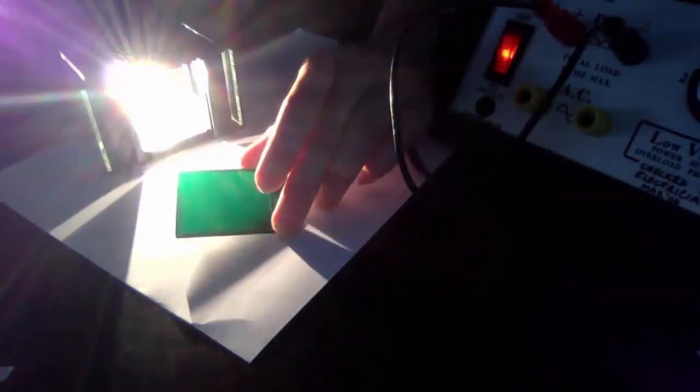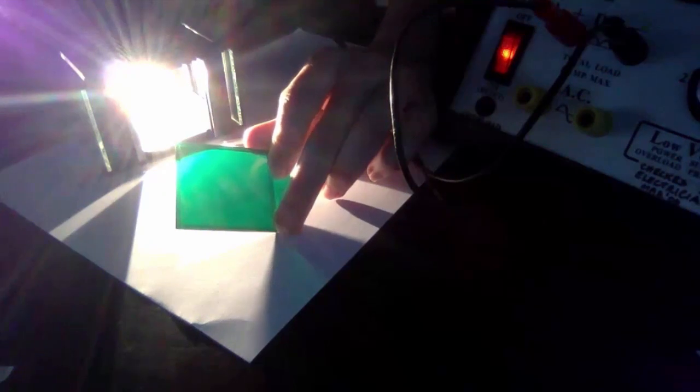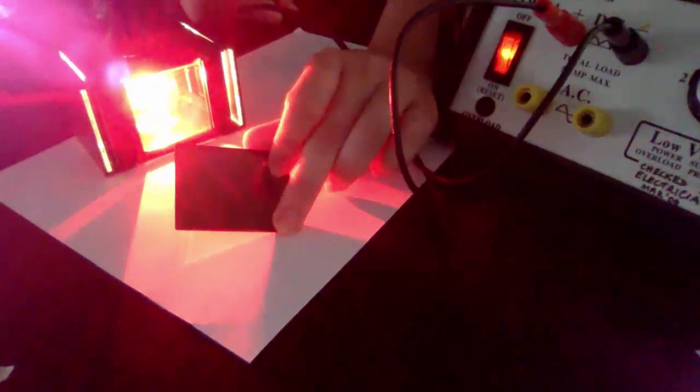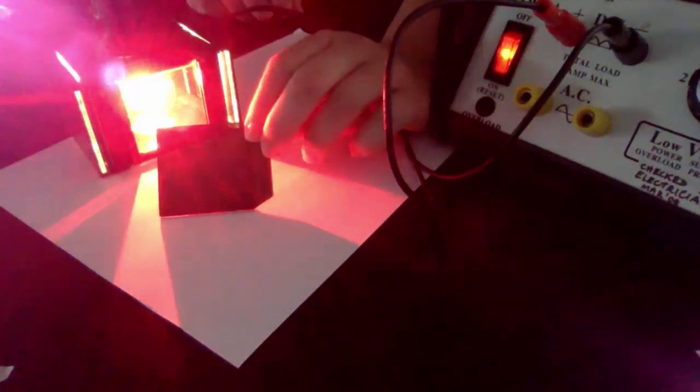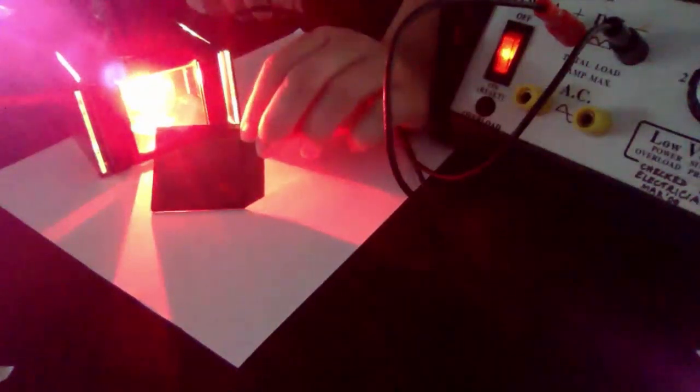Now if we swap those over, we would expect the same thing to happen. So here we have a green card, if we remove all the white light and only allow the red to shine through, that card now appears black because there is no green light for the card to reflect and it is absorbing all of the red light that is being shown through it.